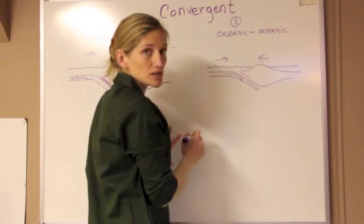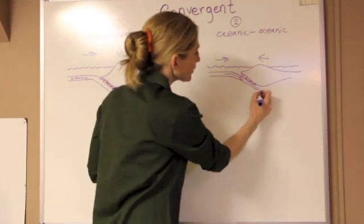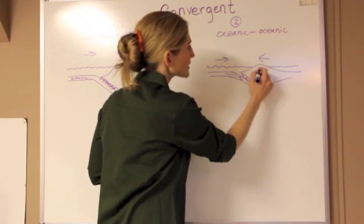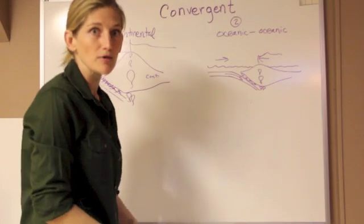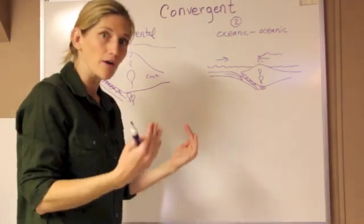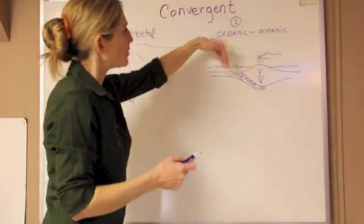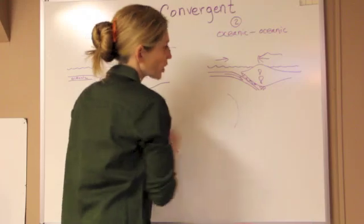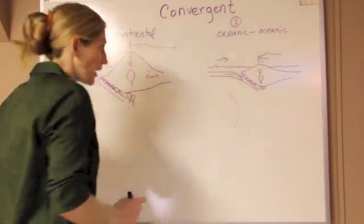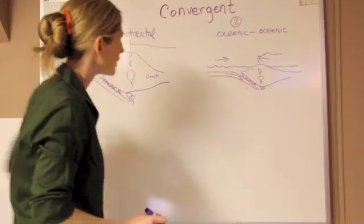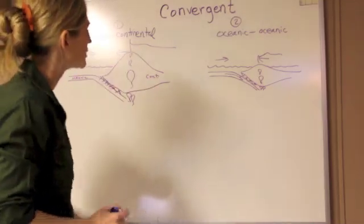Again, we see a subduction zone and an oceanic trench. We get earthquakes all down this subduction zone, and some partial melting that creates a few mountains as well as volcanoes. At oceanic-oceanic convergent plate boundaries we see the formation of island arcs — because the convergence is happening on a sphere, in map view we actually see a nice curved arrangement of volcanoes. These volcanic island arcs are not quite as tall as we would see in oceanic-continental convergence.